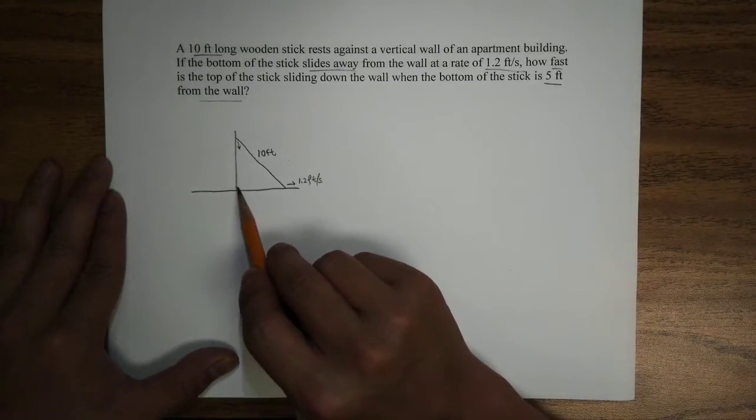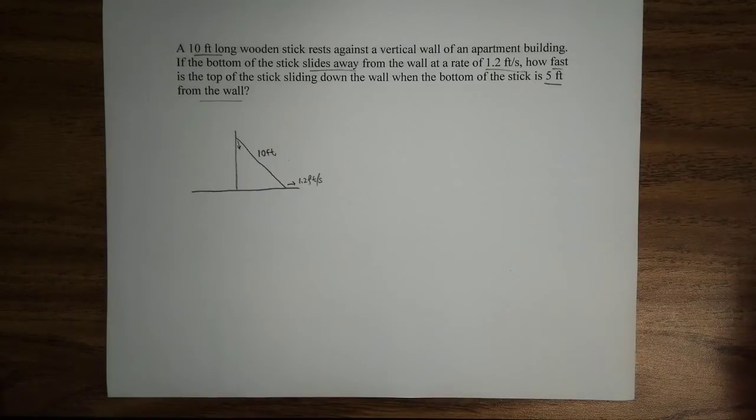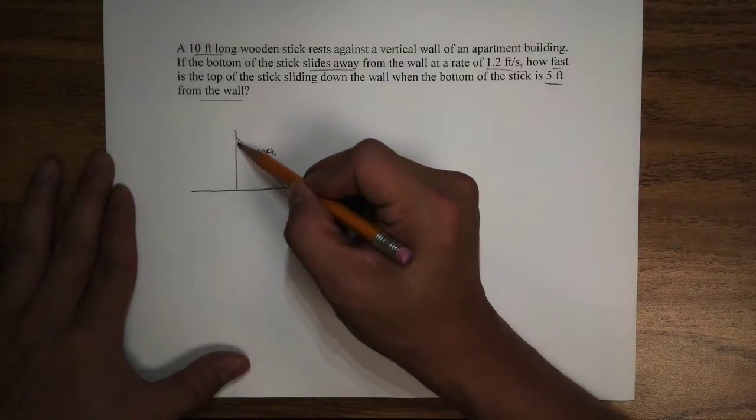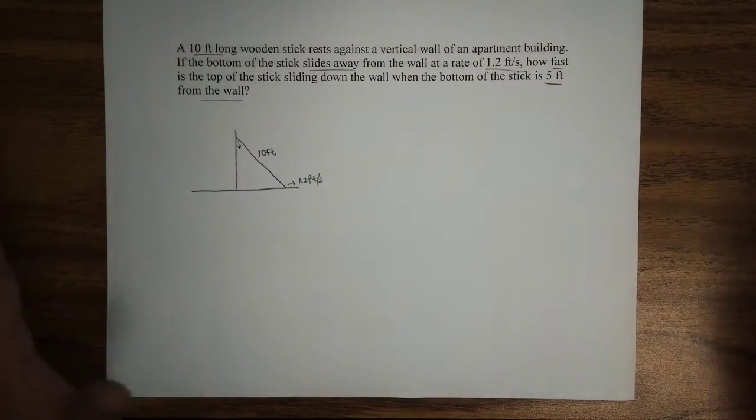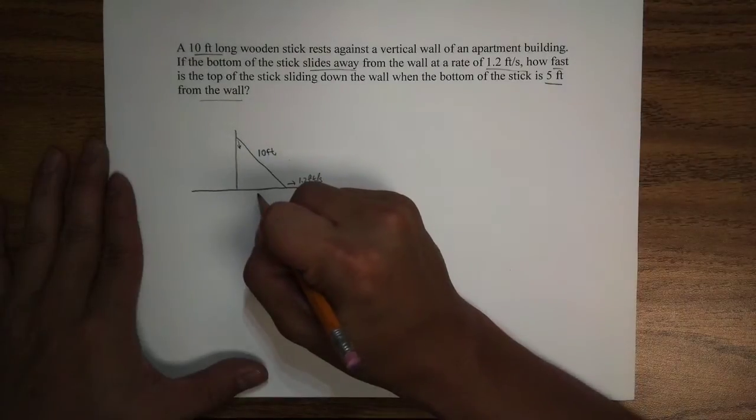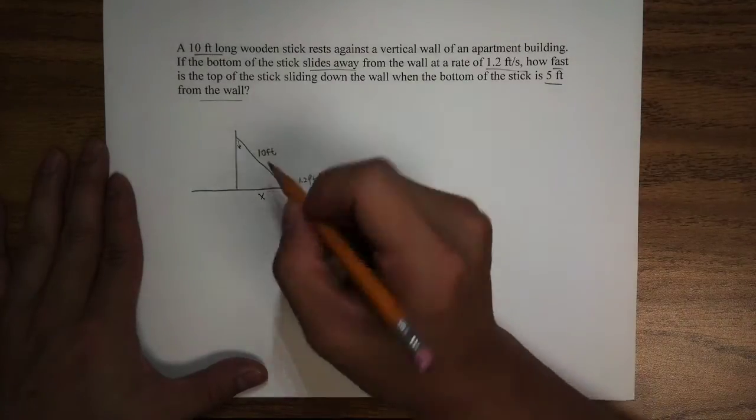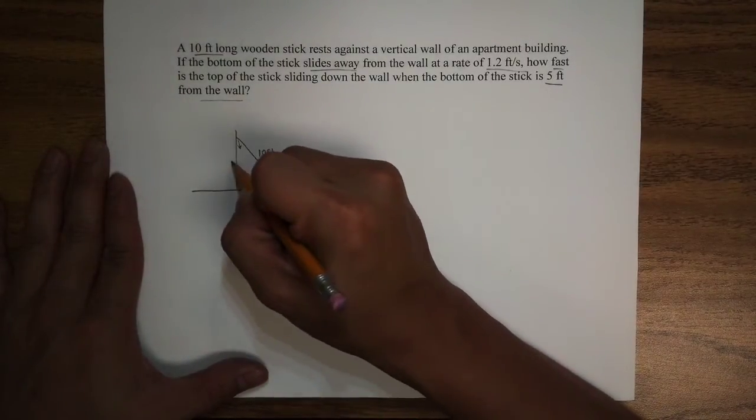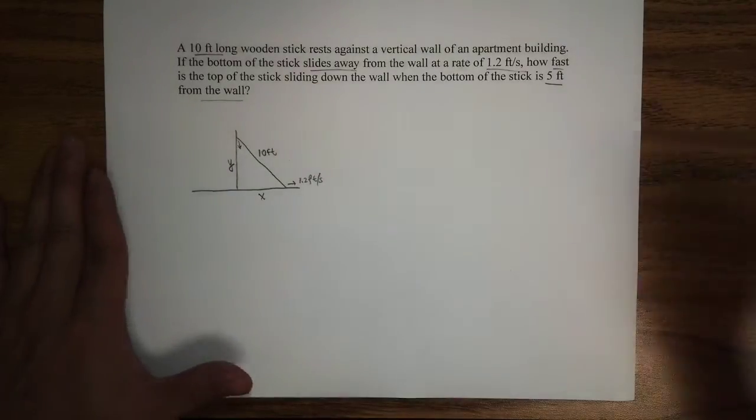So it's saying this here is 5 feet, and we want to find out the rate of the stick dropping down. Now let's go ahead and label this diagram. Now I'm going to label this as X, and I'm going to label this as Y.